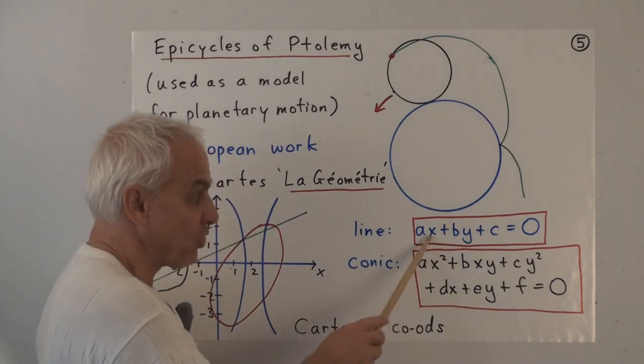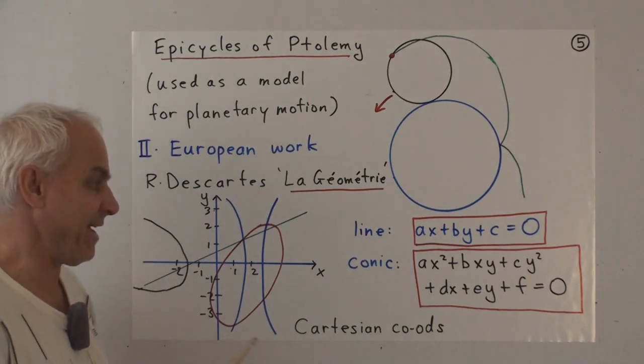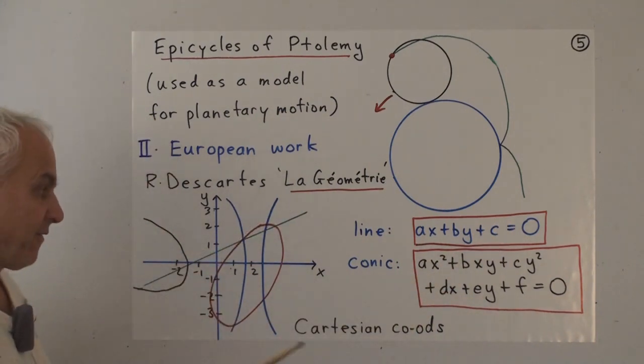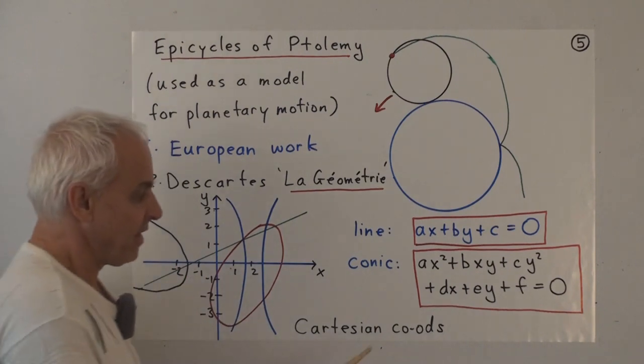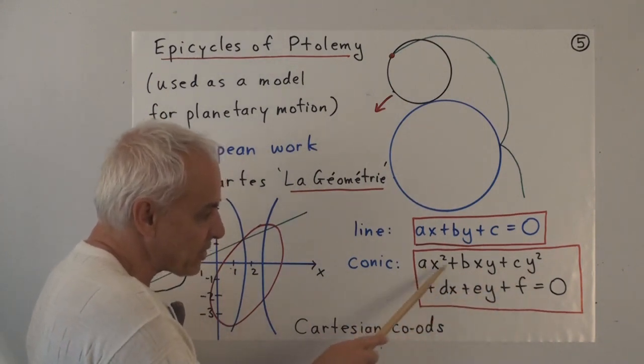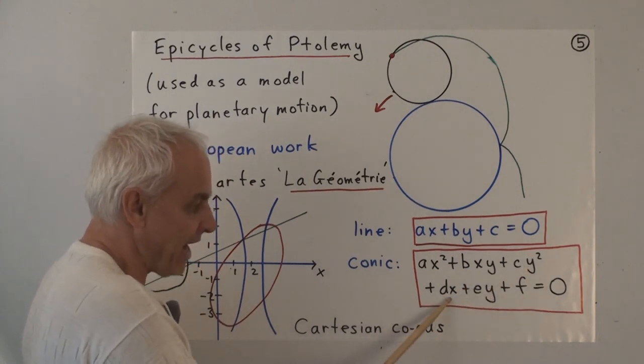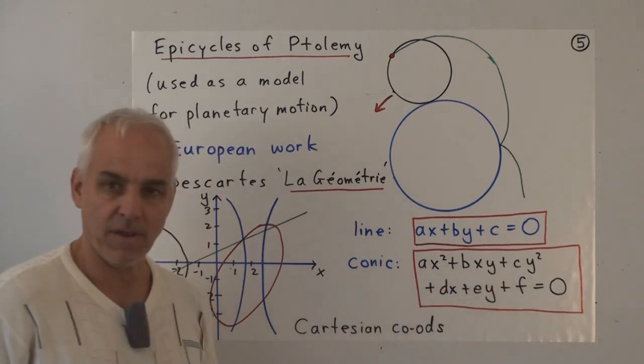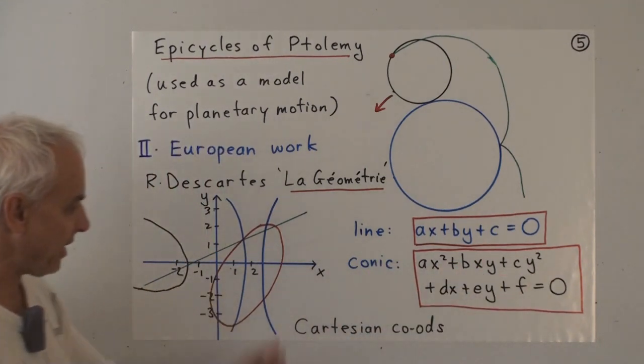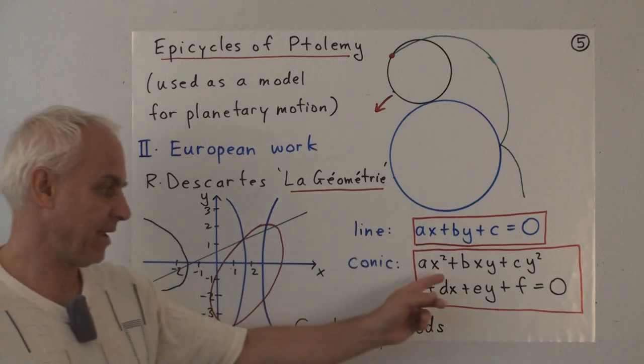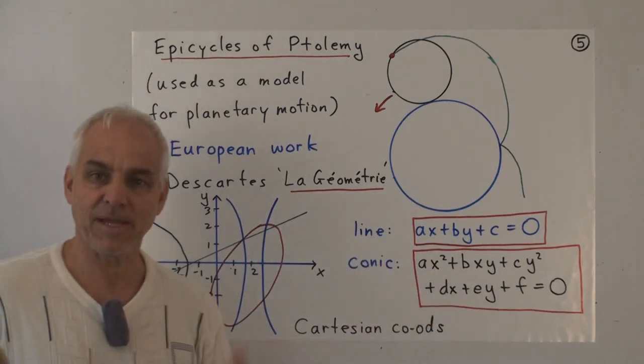Descartes realized that the power of this point of view was that the algebra tells you a lot about the curve. You can calculate purely algebraically instead of having to make geometrical constructions. He realized that if you took the simplest possible relation between x and y—namely a linear relation of the form ax plus by plus c equals zero—then you're getting a line. And he would have been very excited when he discovered that if you go up one level to degree two curves, considering all equations of the form ax squared plus bxy plus cy squared plus dx plus ey plus f equals zero, the corresponding point x,y traces out a conic.